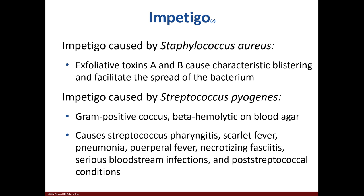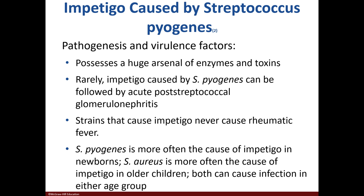If impetigo is caused by Strep pyogenes, other conditions may arise, as it is also the causative agent of other infections. In rare instances, Strep pyogenes can lead to kidney damage after the impetigo infection. It's the most common causative agent of impetigo in newborns, while Staph aureus causes infections in adults and children; however, both bacteria can affect any age group. Both organisms are transmitted via direct and indirect contact. Good hygiene helps to prevent impetigo, and it can be treated with antibiotics.